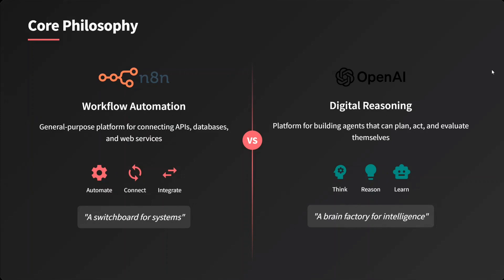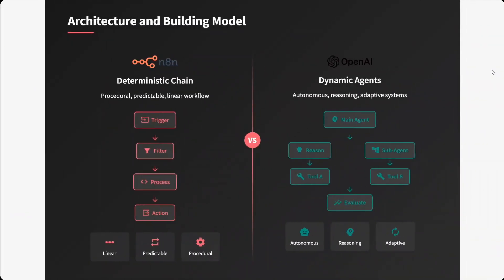In terms of architecture, there are multiple major changes. In the case of n8n, it's a deterministic, procedural, predictable, linear workflow — quite monotonous: trigger, filter, process, action — something you can code out. While in the case of OpenAI's Agent Kit, it's a more dynamic, autonomous reasoning and adaptive system. There's a main agent, sub-agents, tools, evaluation, etc. It's autonomous.